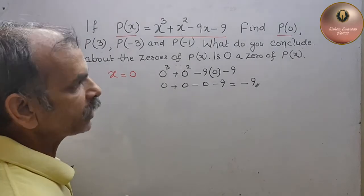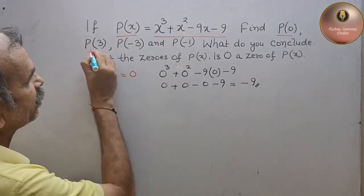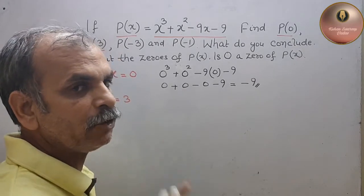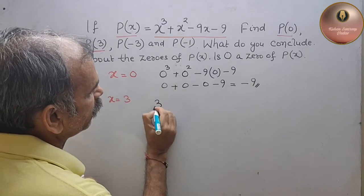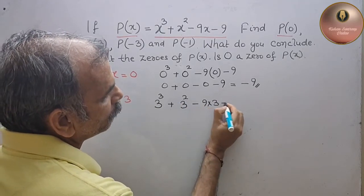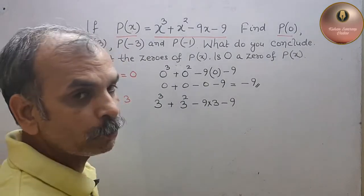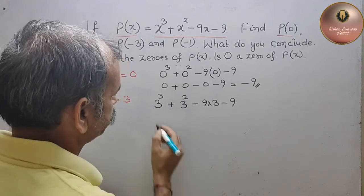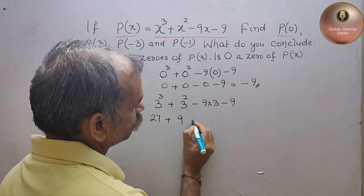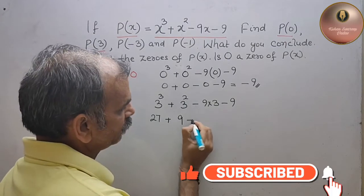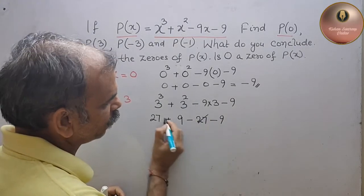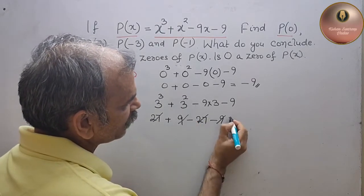Next, p(3) — bracket में 3 दिया है, so we will write x is equal to 3. Put the value as 3: 3 cube plus 3 square minus 9 into 3 minus 9. 3 cube is 27, plus 3 square is 9, minus 27, minus 9. यहां पर 27 minus 27 gone, 9 minus 9 gone, that is equal to 0.